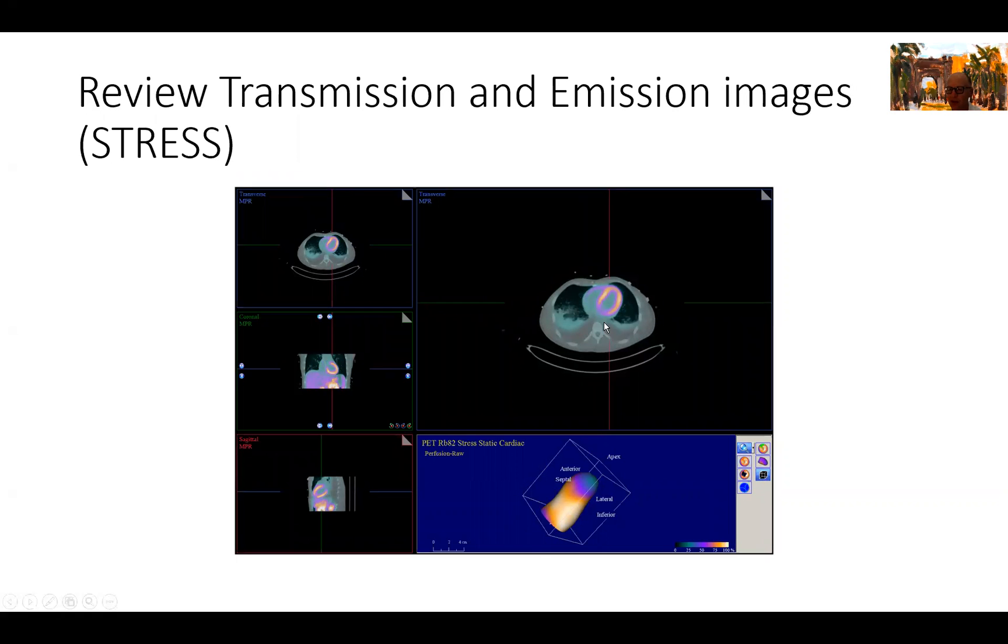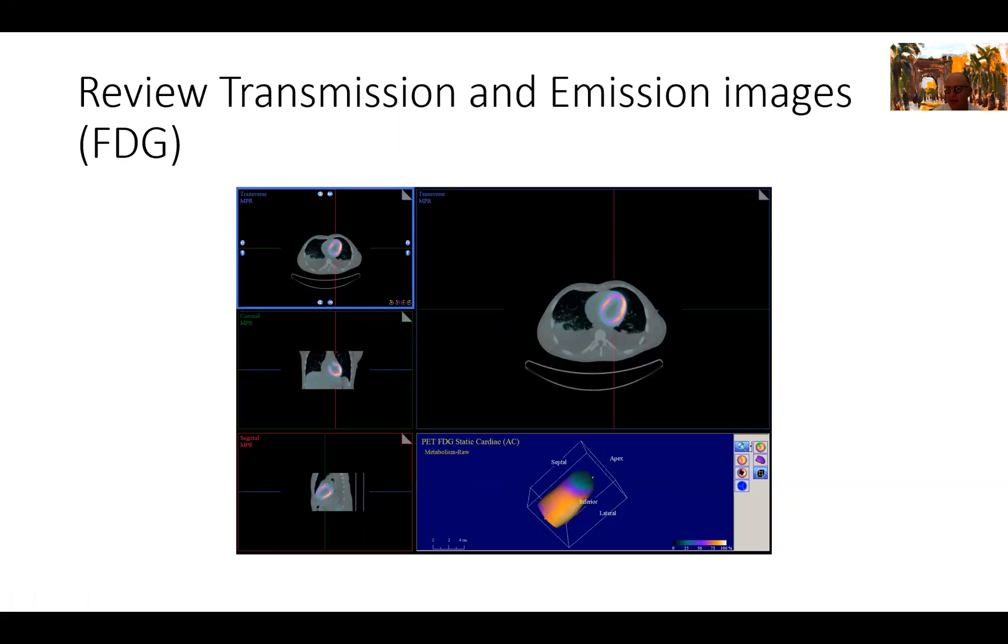We go to the stress images. Similarly, we interrogate the registration of the perfusion images with the CT images and ensure that they're properly registered. Finally, we do the same exercise for the FDG images as you can see here. We can look at them in short axis images or cross cuts across the heart, and then we can look at them transaxially, in the sagittal plane, the coronal plane, and the transverse plane as seen here in the magnified view.